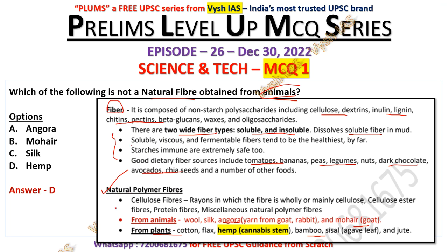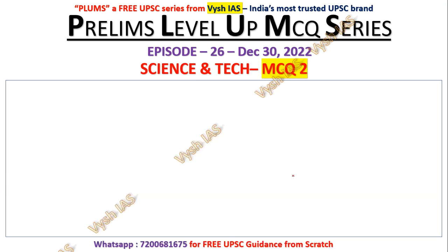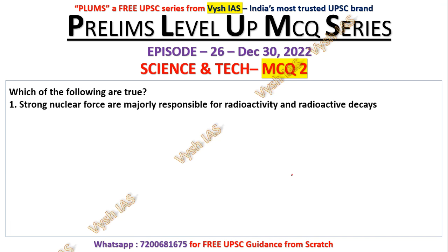I've given details on natural fibers, and enrolled students in the test series will get a detailed two-page notes on artificial or man-made polymer fibers as well. Here I'm showing only the answer section. The answer is hemp because it is obtained from plants.